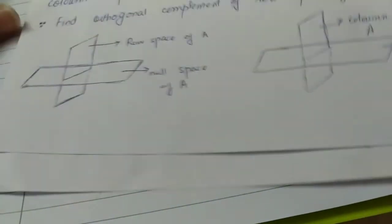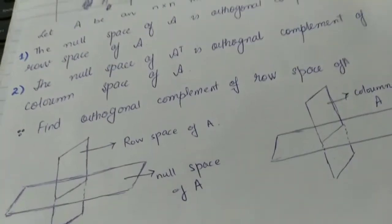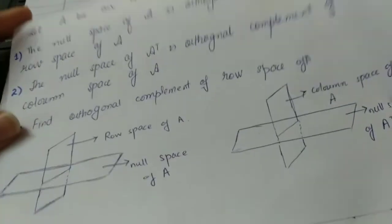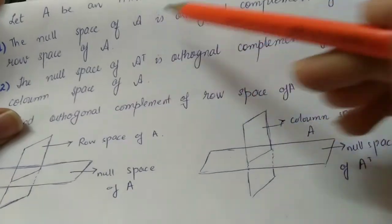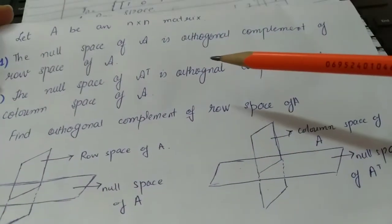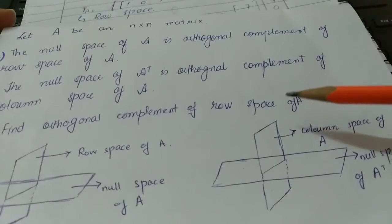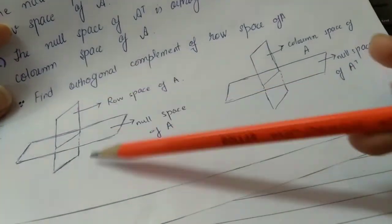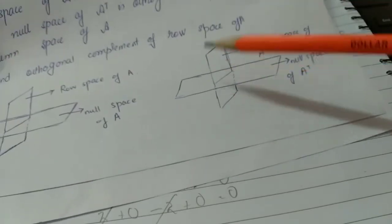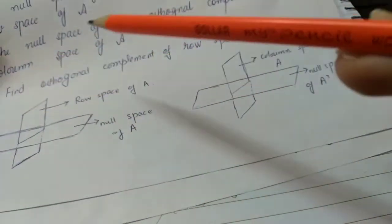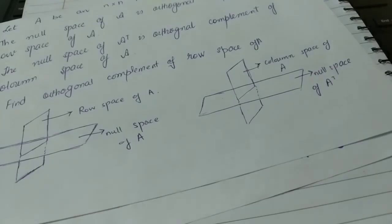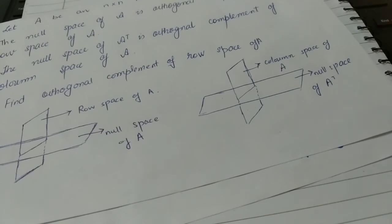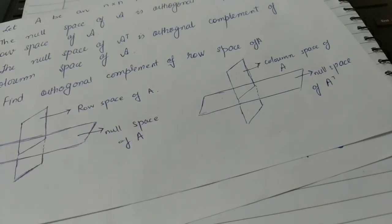Hence we have proved that the null space of matrix A is the orthogonal complement of the row space of A, and the null space of A-transpose is the orthogonal complement of the column space of A. That was today's topic. If you found it helpful, please like and subscribe to my channel. Thank you.